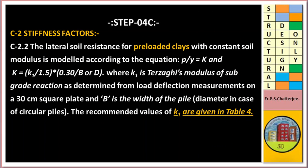Stiffness factor for preloaded clay: the lateral soil resistance for preloaded clay with constant soil modulus is modeled by the equation P/Y = k, where k = k₁ / (1.5 × 0.3 / b or d). Here k is the modulus of subgrade reaction determined from load-deflection measurement on a 30 cm square plate, b is the width or diameter of the pile. Recommended values of k₁ are given in Table 4.